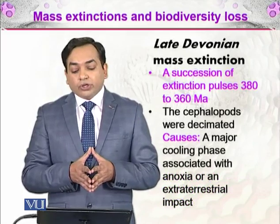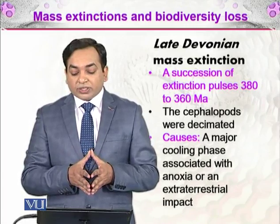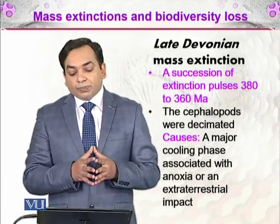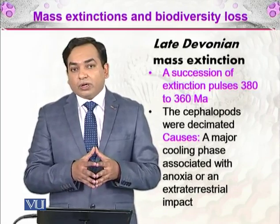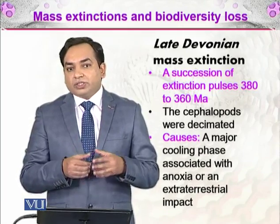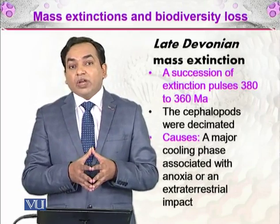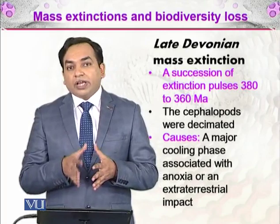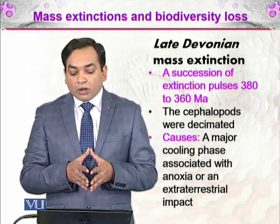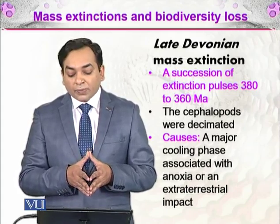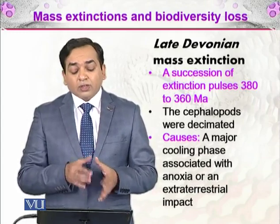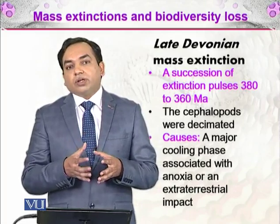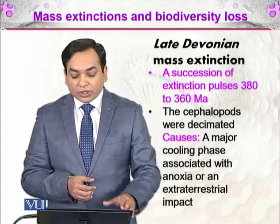The Late Devonian mass extinction was a succession of extinction pulses between 380 and 360 million years ago. During this period, cephalopods — organisms prevailing on oceanic floors — were decimated. The cause was likely a major cooling phase associated with anoxia, or possibly an extraterrestrial impact, which led to this extinction event.